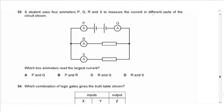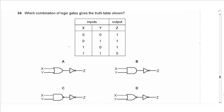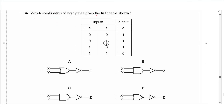Question 33 says: a student uses four ammeters P, Q, R, and S to measure current in different parts of a circuit. Which two ammeters read the largest current? Since there is a parallel connection, the outer current — the current passing through the battery — is the largest. That would be ammeters P and Q. The answer is A.